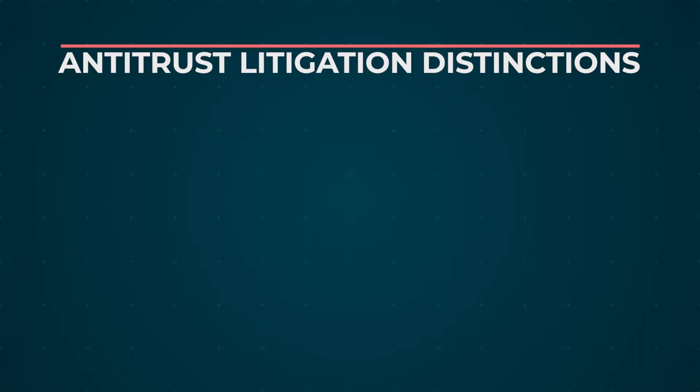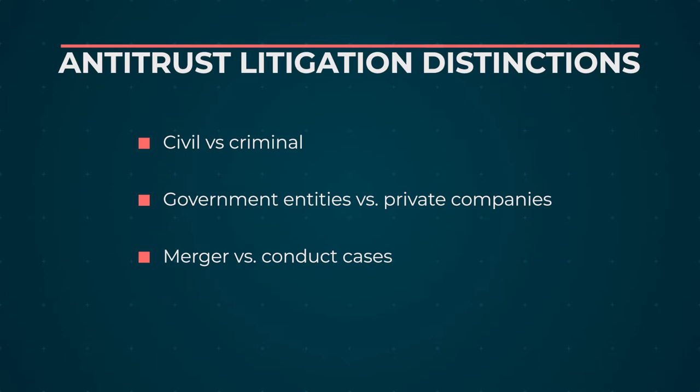Let's break it down a bit—give us an overview of the types of antitrust litigation that we see. I see three main distinctions. The first is civil versus criminal. Price-fixing cases and those types of violations can actually be criminal violations under federal law. On the civil side, you've got another distinction by the type of plaintiff: either government entities at the federal or state level, or private companies suing a customer, competitor, or supplier for some violation that has harmed them. The final distinction is between merger litigation—challenging the potential future effects of an acquisition—versus conduct cases that challenge prior conduct by a company and its effect on the market.